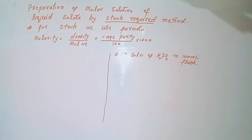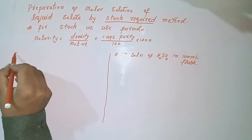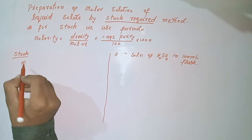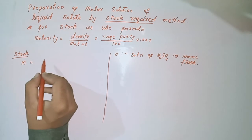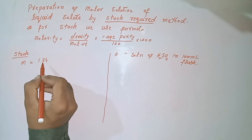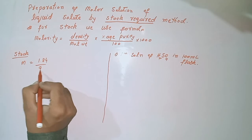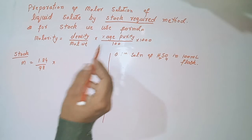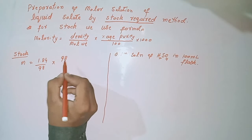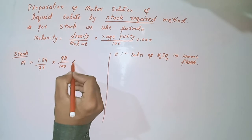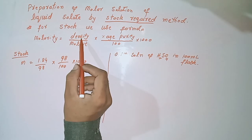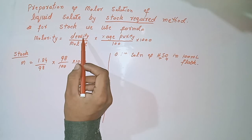First of all, we will make the stock solution using this method. For the stock solution of H₂SO₄: the density of sulfuric acid is 1.84, the molecular weight of sulfuric acid is 98, and the percentage purity of sulfuric acid is 98. So we calculate: 98 over 100 multiplied by 1000.